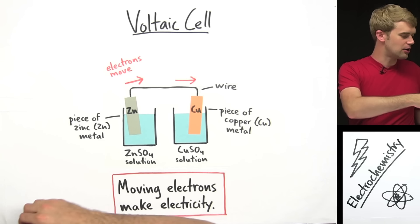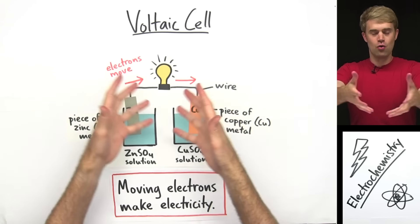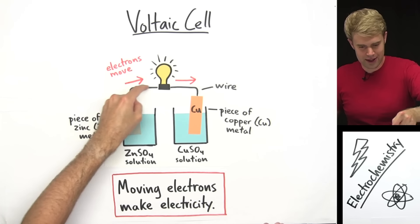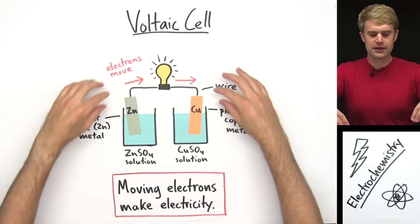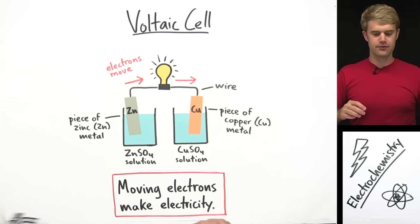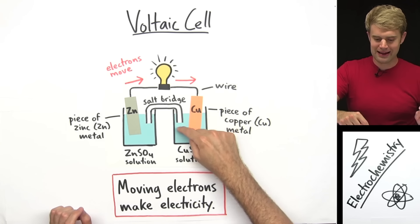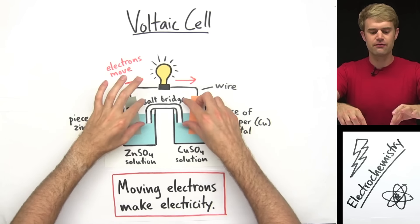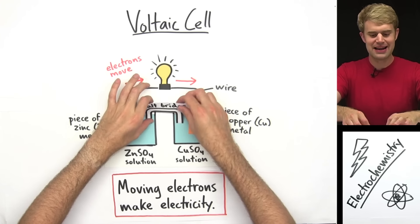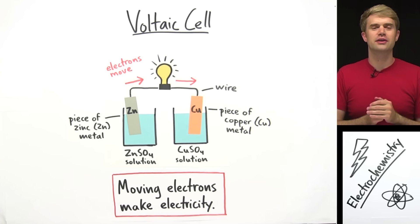We could take a little light bulb and hook it up to this wire, and the light bulb would turn on because there's electricity moving through it. To be really specific, there's one more part of the voltaic cell — a little tube called a salt bridge that connects the two solutions. We'll talk more about the salt bridge at the very end, but for now I'll leave it out to keep things simple.